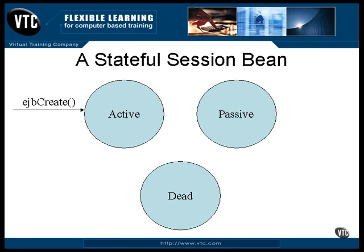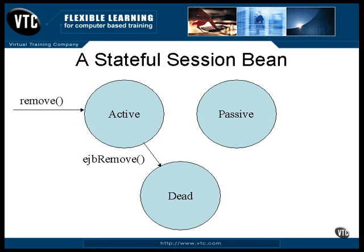When your program first makes contact with a bean, it's created and stored in active memory. It stays there as long as you keep calling its methods from your program. It's possible for the bean to throw some kind of exception while executing a method call; when that happens, the bean is immediately removed from memory. The client can also call the remove method to remove a bean from memory, which causes the container to call the EJB remove method and kill the bean.